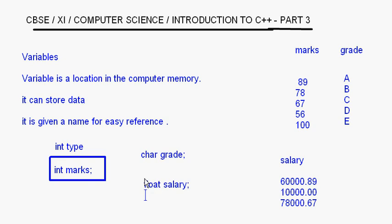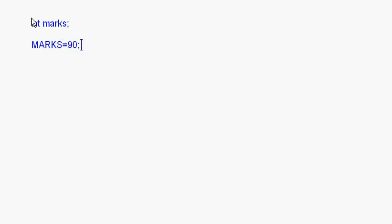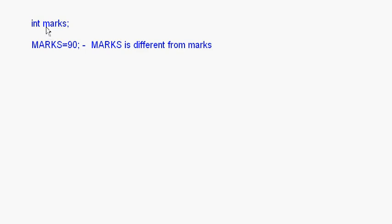Variable names have to be written exactly the same way every time because C++ is case sensitive. For example, if I declared `int marks` (lowercase) and then write `Marks = 90`, this statement will generate an error because `Marks` is different from `marks`.